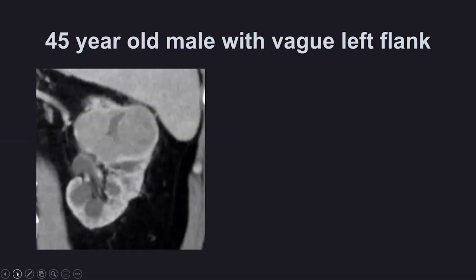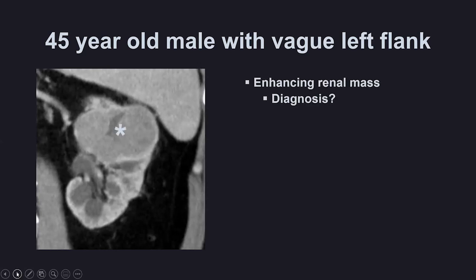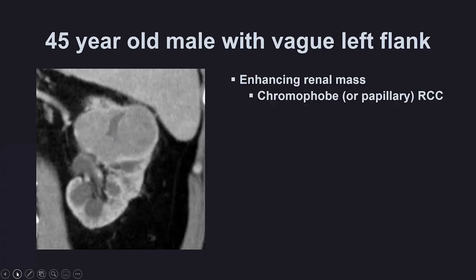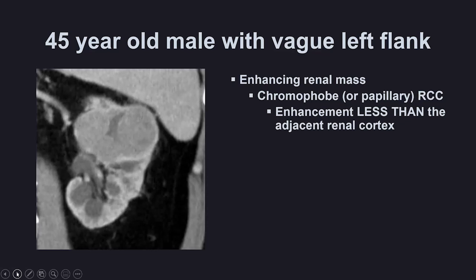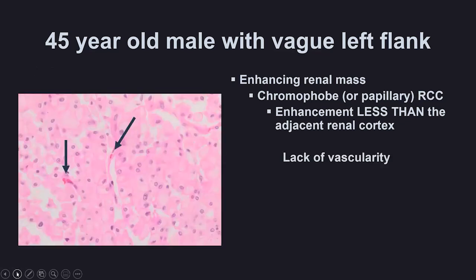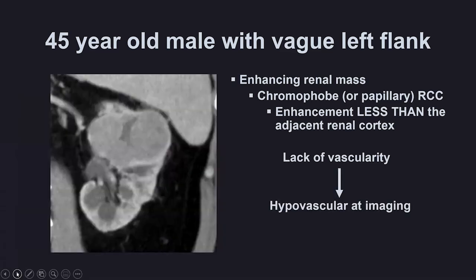The last case: a 45-year-old male with vague left flank pain and an enhancing renal mass on CT. The diagnosis here is chromophobe or papillary RCC, not clear cell. Notice that the enhancement is less than the adjacent renal cortex. Chromophobe and papillary RCC both have much less vascularity than clear cell RCC — very little vascularity. Lack of vascularity under the microscope means hypovascular imaging. That is why chromophobe and papillary RCC have enhancement less than the adjacent renal cortex. Thank you very much for your attention.